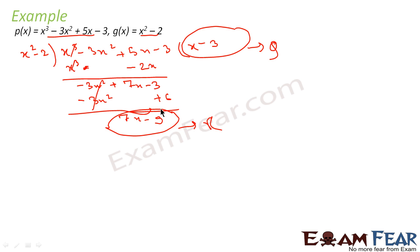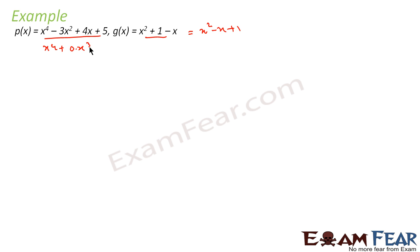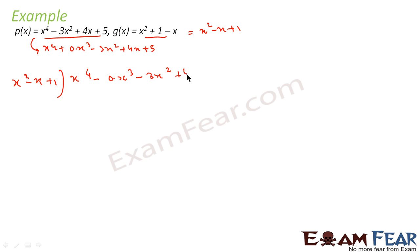Let's take a home example: p(x) = x⁴ − 3x² + 4x + 5 and g(x) = x² + 1 − x. This is not arranged, so let me rearrange g(x) as x² − x + 1. Since x³ is missing from p(x), I can write it as x⁴ + 0·x³ − 3x² + 4x + 5 to make the division neater. Now let me apply the Euclid formula with x² − x + 1 as divisor.